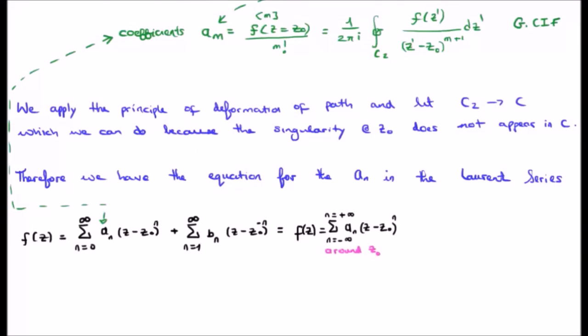We apply the principle of deformation of path and let C2 go to C, which we can do because the singularity at z zero does not appear in C. Therefore we have an equation for a sub n in the Laurent series.